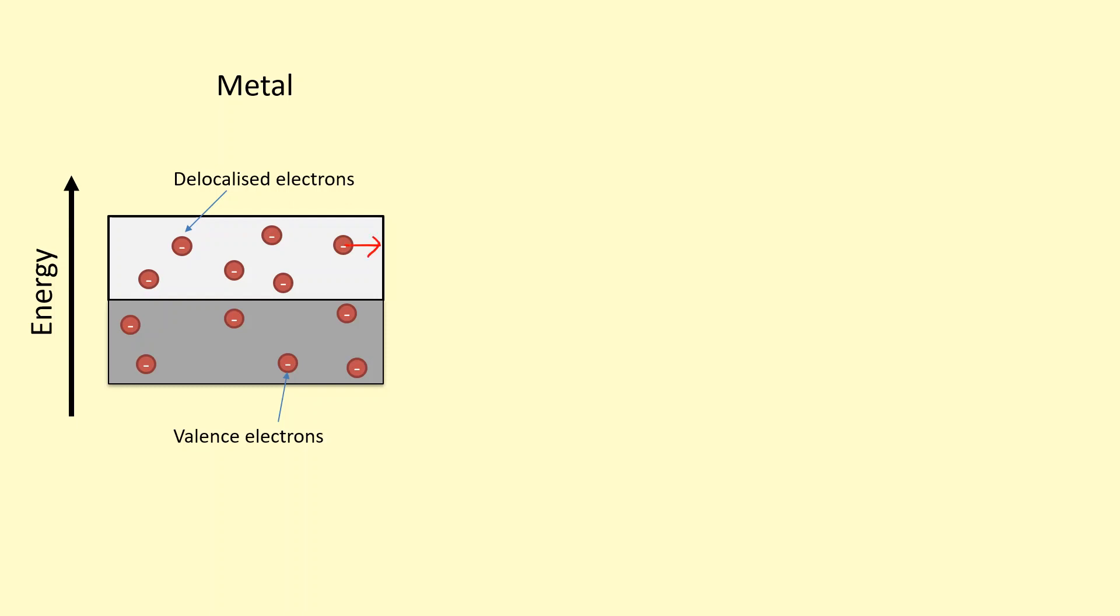If I apply potential difference, say I make this positive and this negative, they can carry current. And with metals, you can see there are plenty of delocalized electrons in this band, which is why metals are good conductors.